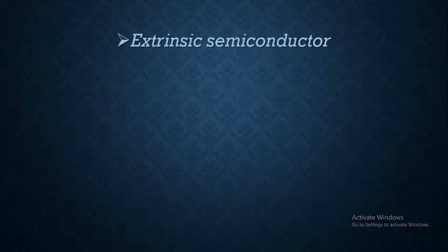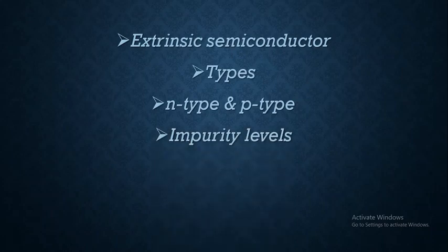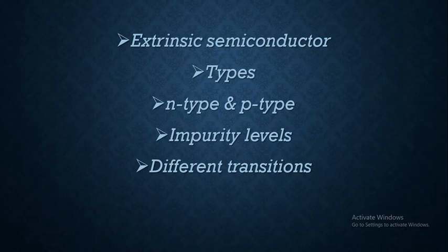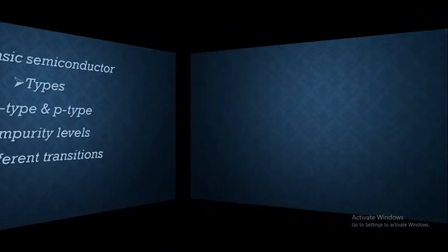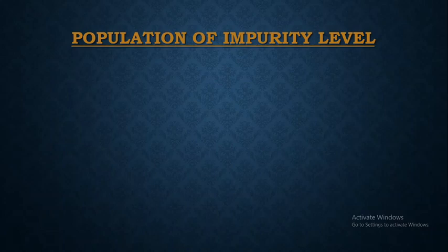In our previous sessions we have already discussed about extrinsic semiconductors, its types — n-type and p-type — as well as the impurity levels defined as donor levels and acceptor levels, and the different types of transitions taking place between these levels. Today we are going to study the population of impurity levels, that is the population of donor level as well as the population of acceptor level.